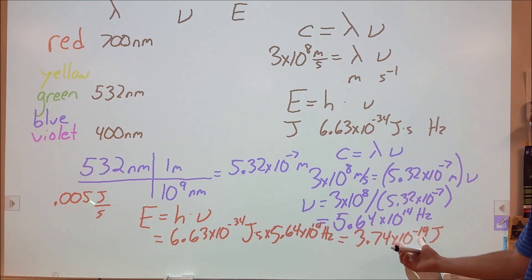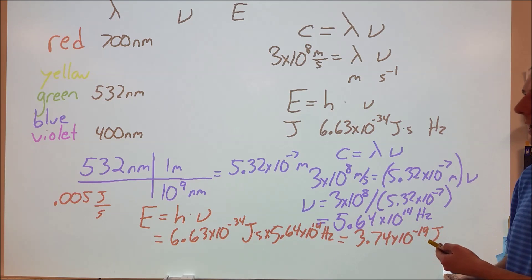In terms of how many light waves are leaving this laser per second, it's an extraordinary amount. We're looking at 10 to the negative 3rd versus 10 to the negative 19th. That's a ratio of 10 to the 16th. We're looking at 10 quadrillion light waves emanating from this laser every second.